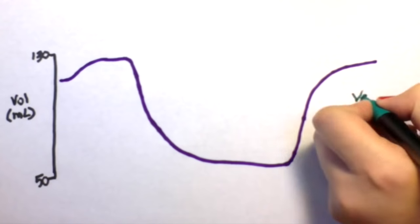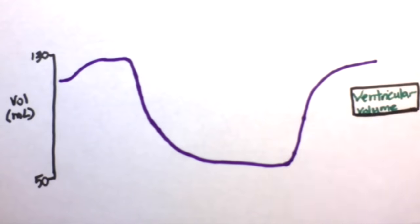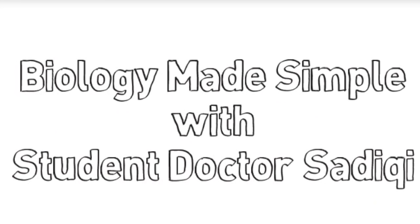Looking at the ventricular volume, we see a huge drop in volume during the rapid ventricular ejection phase because blood is being pumped out of the ventricle into the aorta, so it makes sense that the volume of the ventricle would drop. The volume starts slowly increasing when the mitral valve opens and blood is pumped from the atria into the ventricle, where it accumulates once again.